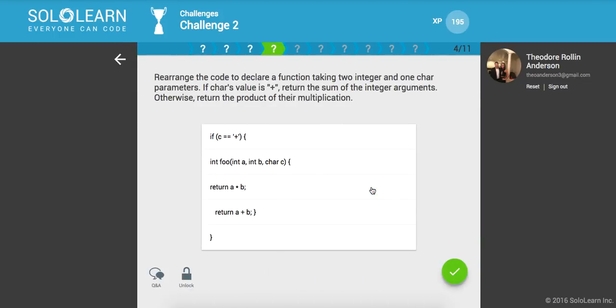So rearrange the code to declare a function taking two integers and one character parameter. If character's value is plus, return the sum of the integer arguments. Otherwise, return the product. So let's make our function up here. And so we're going to say if it's equal to plus, let's go ahead and return that. Otherwise, let's return A times B.